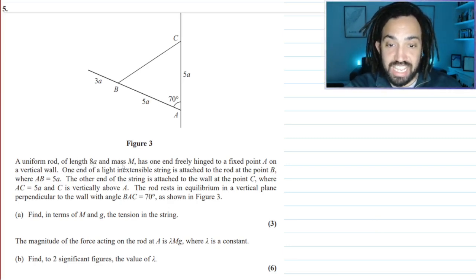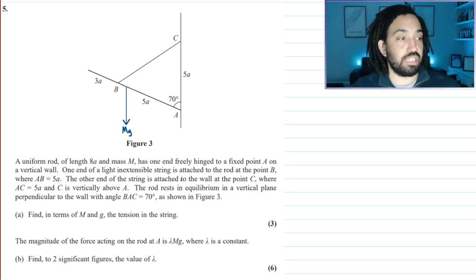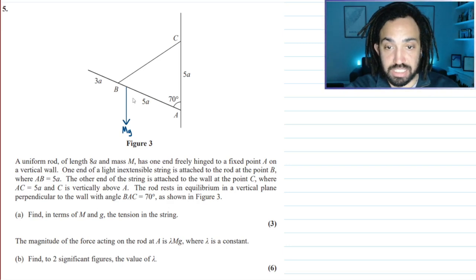A uniform rod of length 8a and mass m. So straight away I can draw a line coming down like this. This will be my mass multiplied by the gravitational force g, and that's the weight of the rod.